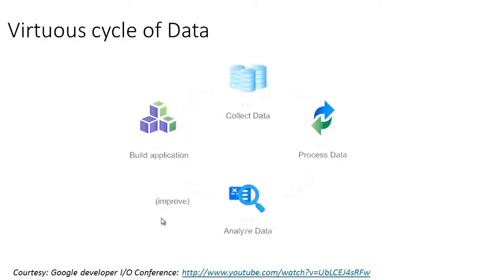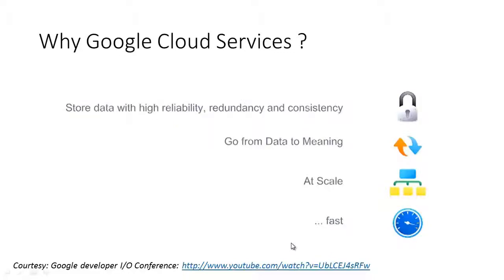If I were to categorize the different aspects of big data, there are at least four main categories. First, you collect the data — it can be in the form of CSV files or anything — and you store it somewhere. Second, you start processing the raw data into a more consumable format. Once processed, you use tools to analyze and visualize information, turning data into insights, and then build scorecards or applications from it.